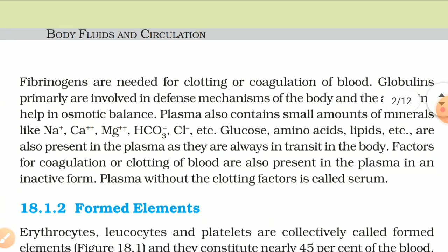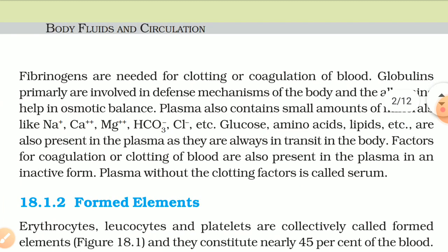Fibrinogens are needed for clotting or coagulation of blood. Globulins are primarily involved in the defense mechanism of the body, and albumins help in osmotic balance. Plasma also contains small amounts of minerals like Na+, Ca2+, Mg2+, HCO3−, Cl−, etc.